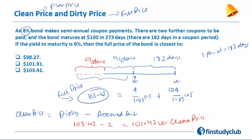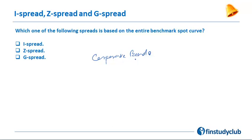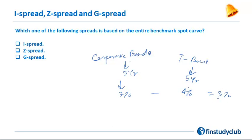That's the relationship between clean price and dirty price. Let's now look at a question covering I spread, Z spread, and G spread. We often deal with corporate bonds which are risky, and we want to understand the risk premium. A good way is to compare the yield of a corporate bond with a comparable treasury bond. For a 5-year bond, if the T-bond YTM is 4% and the corporate bond YTM is 7%, the 3% gap is the risk premium — this spread is known as the G spread.